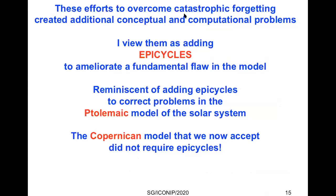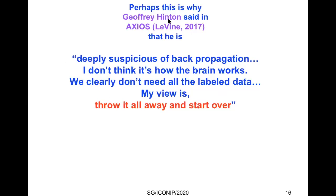The same problem occurs with evolutionary algorithms, diffusion-based neuromodulation, and other approaches to fix backprop. These efforts created additional conceptual and computational problems. I view them as adding epicycles to ameliorate a fundamental flaw, reminiscent of adding epicycles to correct the Ptolemaic model of the solar system — the Copernican model didn't require epicycles. Perhaps this is why Geoffrey Hinton said in an Axios interview: he's deeply suspicious of backpropagation. 'I don't think it's how the brain works. We clearly don't need all the labeled data. My view is throw it all away and start over.'